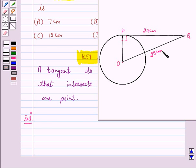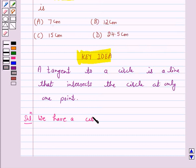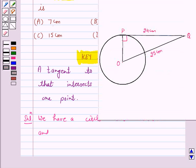Hence, we are given a circle with center O, and PQ is equal to 24 cm. We have a circle with center O, and OQ is equal to 25 cm.